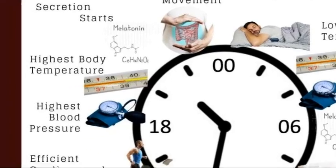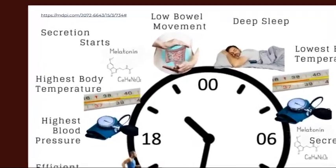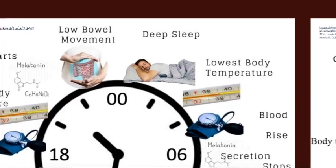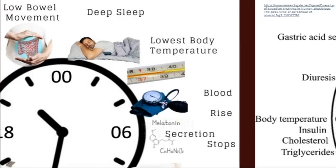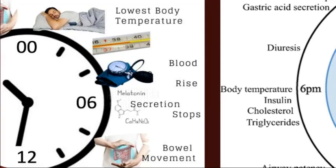Our blood pressure reaches its highest levels around about 6 p.m., and body temperature also reaches its highest levels around that time. Melatonin starts being secreted again toward the end of the evening, and bowel movements stop late at night. Then in the early hours from midnight to about 6 a.m. we have deeper sleep, lowest body temperature, and blood pressure drops right down.